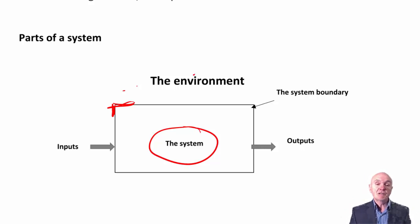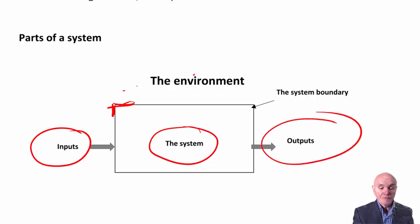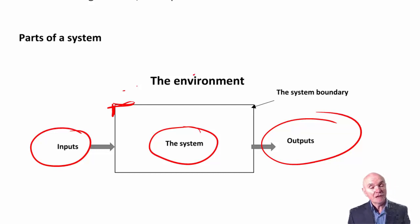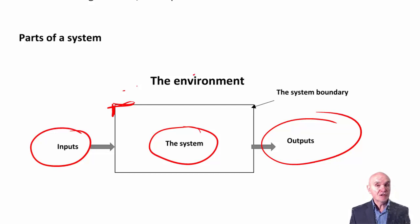Most systems interact with the environment. They have inputs coming in and outputs going out. A typical manufacturing system will have raw materials coming in and finished products going out. A school has uneducated children coming in and hopefully educated, somewhat older children coming out. What happens in the system is some sort of processing, some sort of transformation, whether it is production or providing some sort of services.